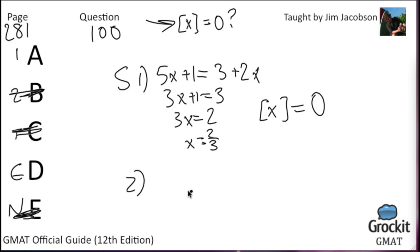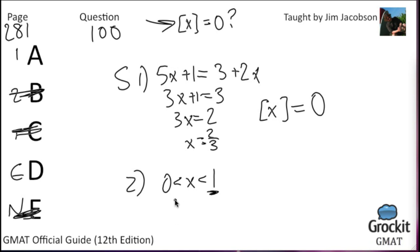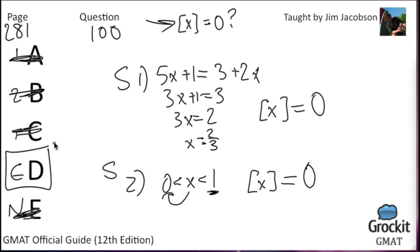Statement 2 says 0 is less than X, which is less than 1. Since X is between 0 and 1 exclusively, X is not an integer, so we apply the floor function and go down to the next lower integer. The next integer below any value between 0 and 1 is zero. This also gives us zero, so statement 2 is also sufficient. We cross off A and circle answer choice D.